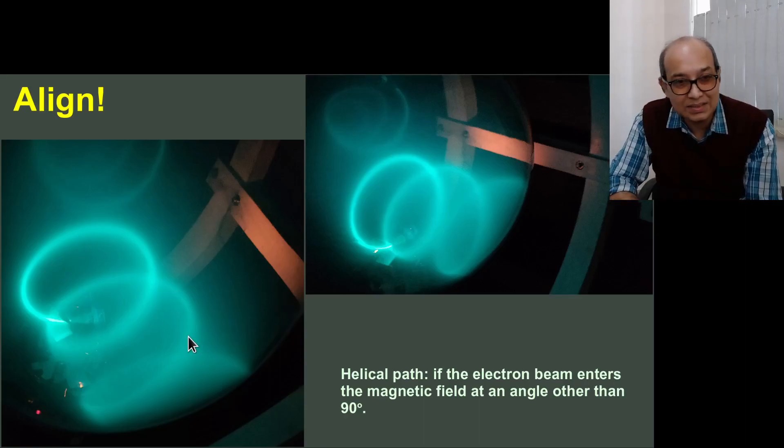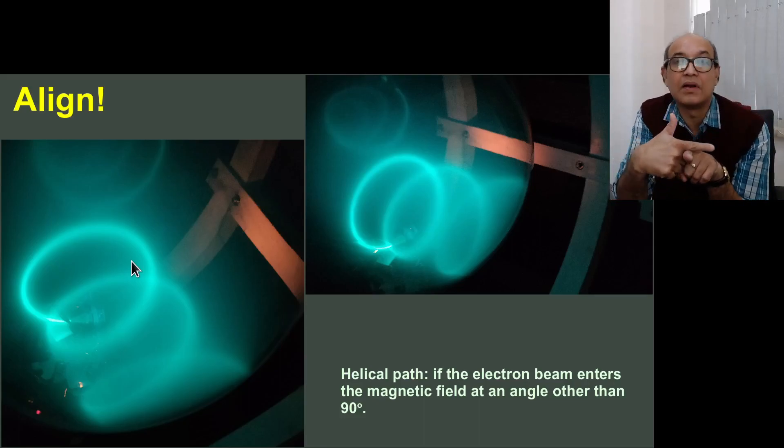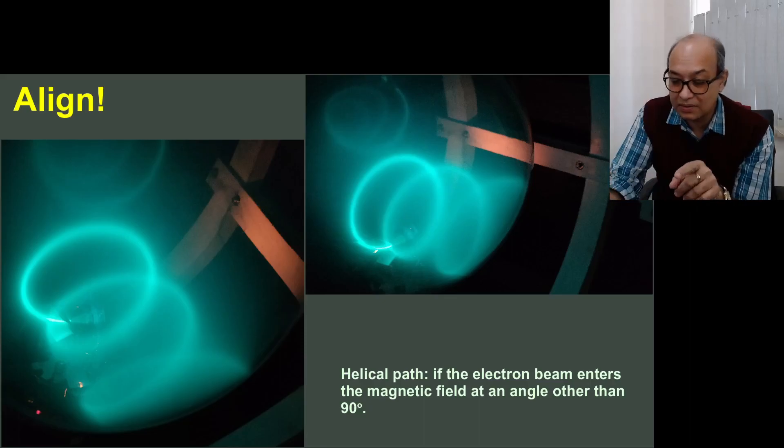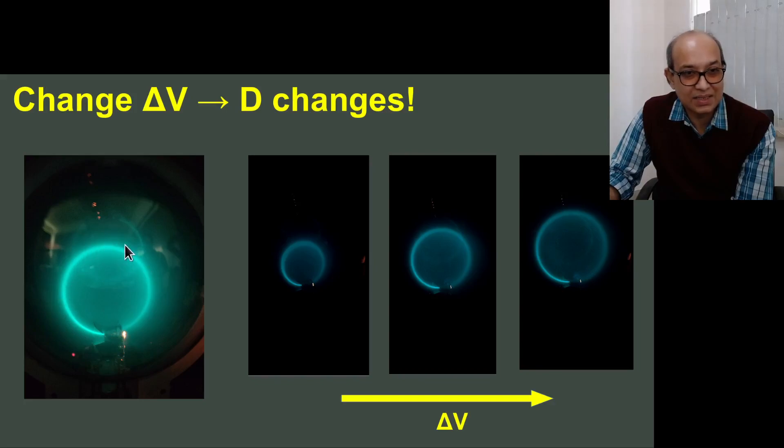And you will be able to see that. I have taken some pictures to show you that. The helical trajectory is quite visible. So you turn it, you turn the bulb until the electron beam is perpendicular to the magnetic field. And when that happens, you have a perfect circle. Like this. So this is a nearly perfect circle. The electron beam is coming out from this end and then it goes in a circle and then comes back.